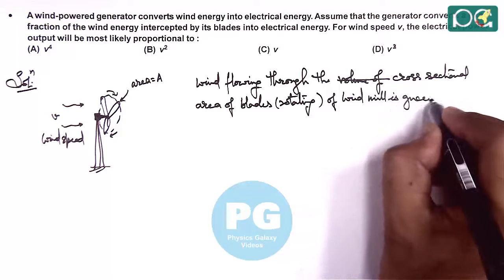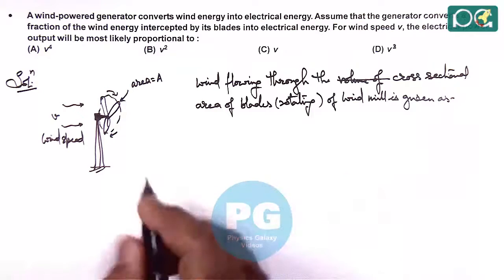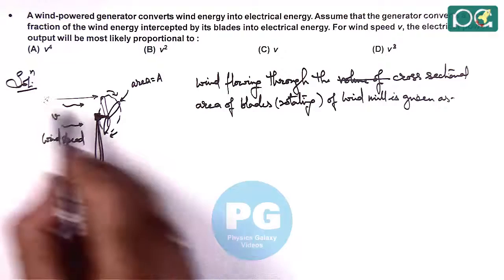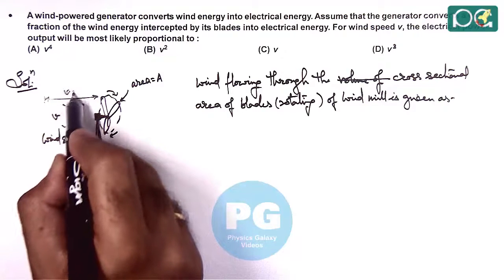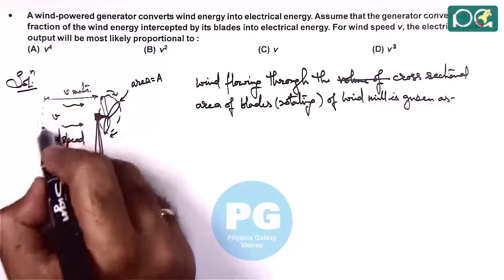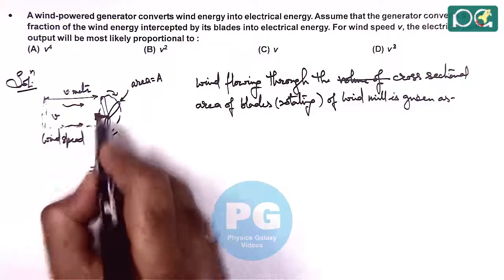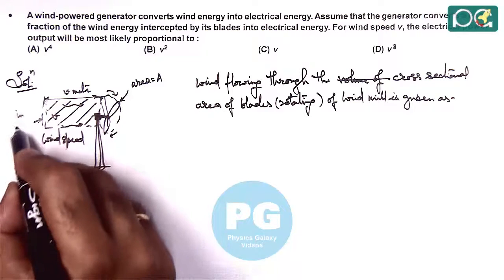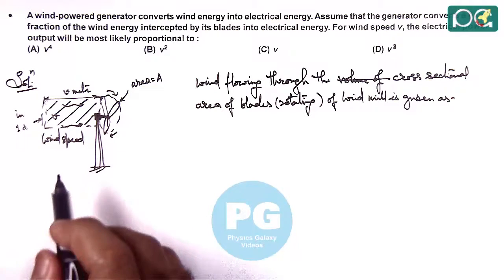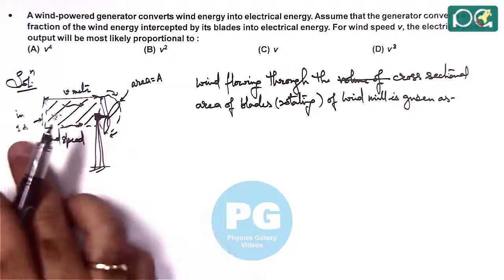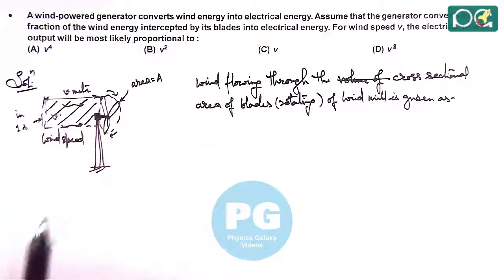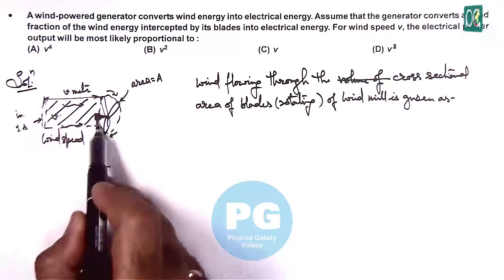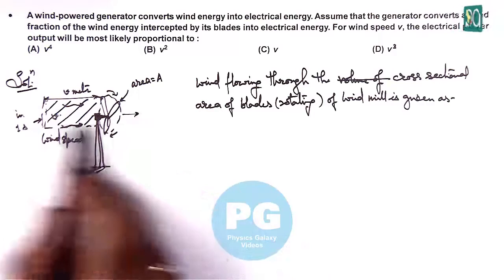Here we can say in one second the distance travelled by the wind is V meters. So this would be the volume, or we can say it will intercept the blades in one second. So if wind is blowing at velocity V meter, then in one second it will travel V meter distance. So V meter length and cross sectional area A - the cylindrical volume will intercept with the blades and come out.